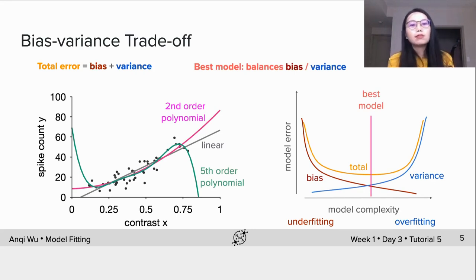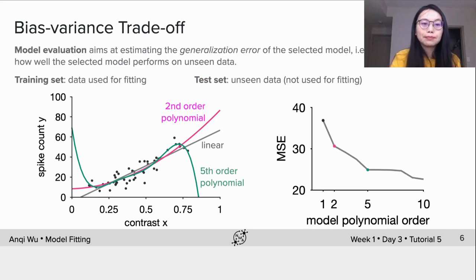Here the bias variance and total error curves are drawn because we know the true model. But really we don't. So we need a practical way to do model selection based on the data points. In practice, how we find this total error curve? We find it using model evaluation. It aims at estimating the generalization error of the selected model, i.e. how well the selected model performs on unseen data.